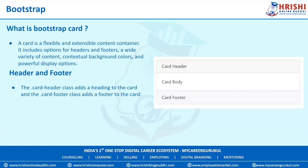If you give a class of dot card, the HTML will understand that this particular div is a card container. If you want to give a header, simply use the class name dot card-header and include your heading content inside it. Similarly, you use card-body and card-footer for the respective sections. Once you see the practical implementation, all doubts will be cleared.